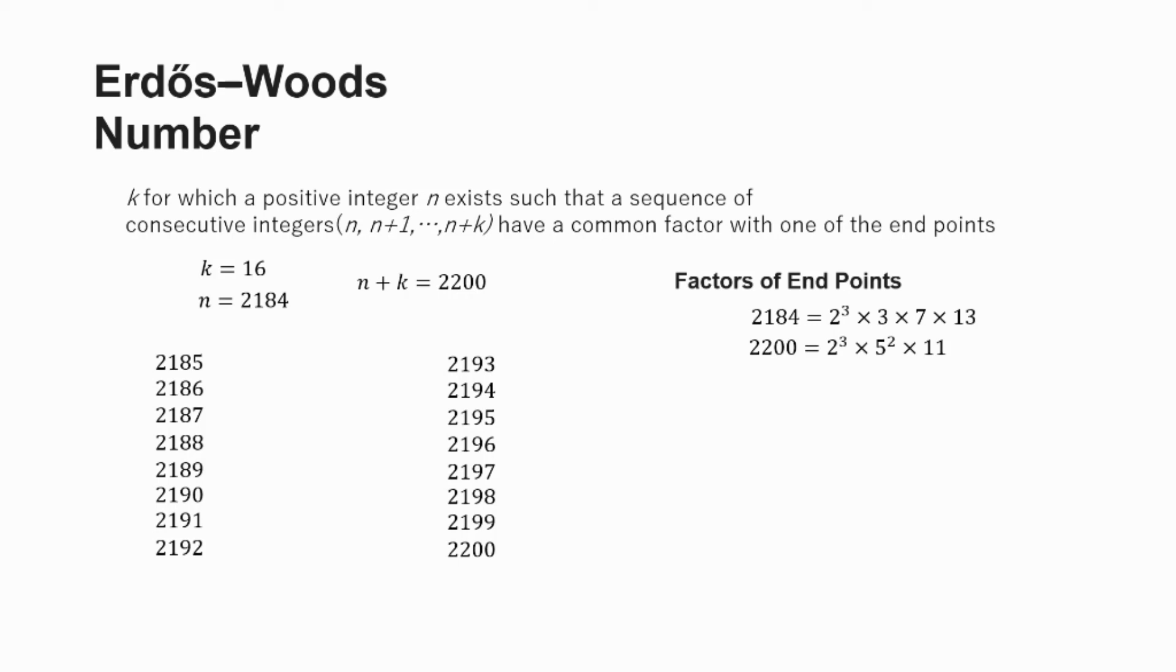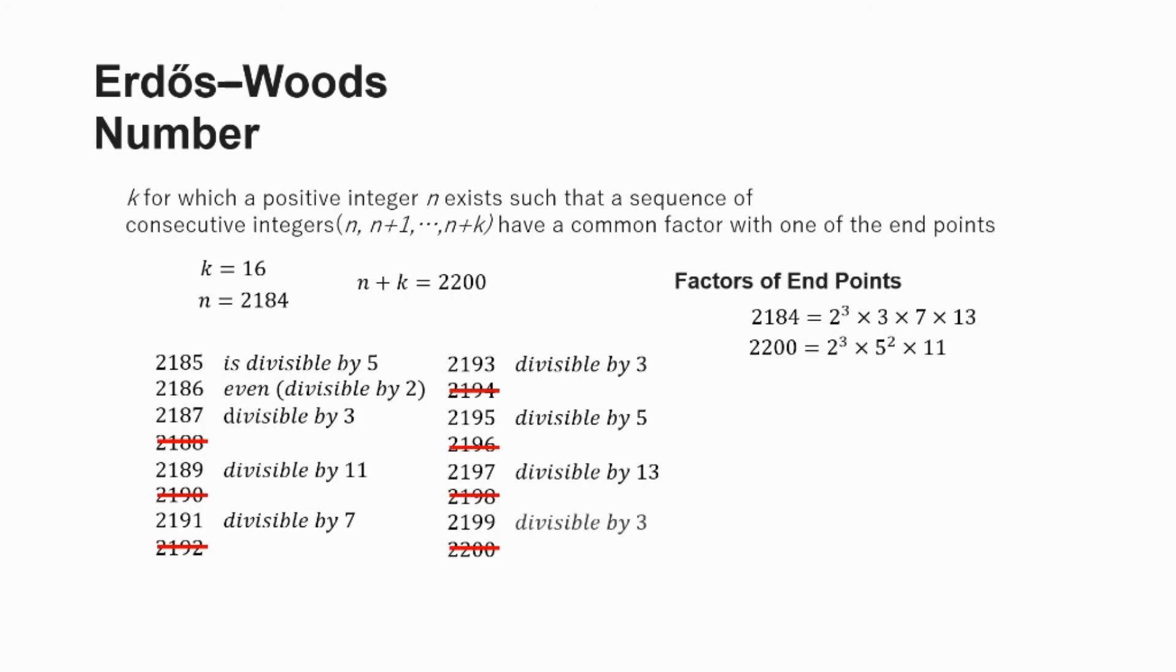Now the first number in the series ends in a 5, so we know right off the bat that it's divisible by 5. The next one, 2,186, is even, so we know it's divisible by 2. By that logic, actually, we can cross off all the even numbers in this series because we know all of them will be divisible by 2. So the next one, 2,187, is divisible by 3. 2,189 is divisible by 11. 2,191 is divisible by 7. 2,193 is divisible by 3. 2,195 is divisible by 5. 2,197 is divisible by 13. 2,199 is divisible by 3. So we can check and see that all of these are divisible by one of the same factors as either the beginning point or the end point of the series.